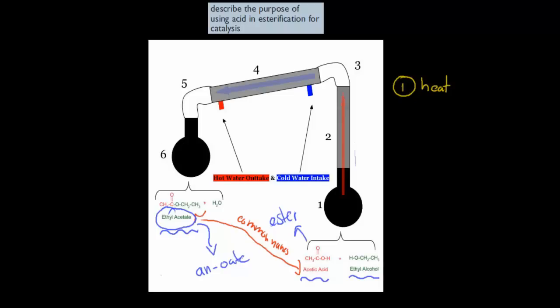That means these particles will move faster, and it's more likely that they will combine. So heat is one way, and the other way is by using an acid catalyst. So we can pour some acid catalyst into the solution, and it will make it go faster as well. These are the two ways we can actually make sure that this reaction happens. And the reason why I'm mentioning this is because the dot point itself says describe the purpose of using acid in esterification for catalysts.